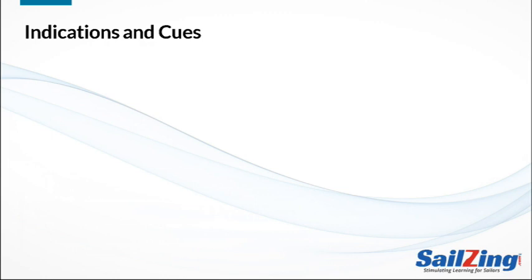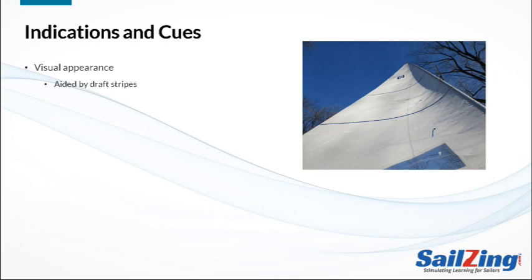We have three primary indications for draft shape. First is just by looking at the sail — the sail shown has draft forward, a flat leech, and a slightly rounded entry. The draft stripes make it easier to see this. Pay special attention to the batten at the top of the sail: if the leech is flat, the top batten will be roughly parallel to the boom. If you're having trouble pointing, it may be because you're not trimming hard enough to get the upper leech flat or slightly hooked to windward.